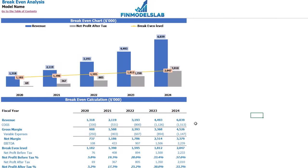On the break-even tab you may find the calculation of the revenue break-even level and a break-even chart. For this particular use case, the revenue break-even level is less than the actual revenue calculation, which means the company is profitable.